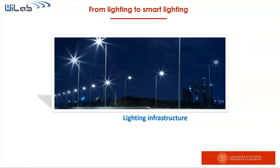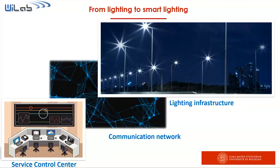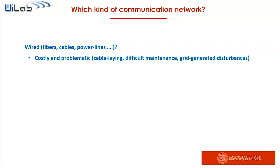But how do we move from a traditional light infrastructure to a smart light infrastructure? We need first of all a control center which is in charge of managing the service, and we need a communication network that interconnects the control center with the light infrastructure. Should we use a wired communication network realized by means of fibers, cables, or power lines? This is not a good idea because for this kind of application wired networks are costly — you have to lay cables, they are problematic, maintenance is difficult, and in the case of power lines you can also have grid-generated disturbances.